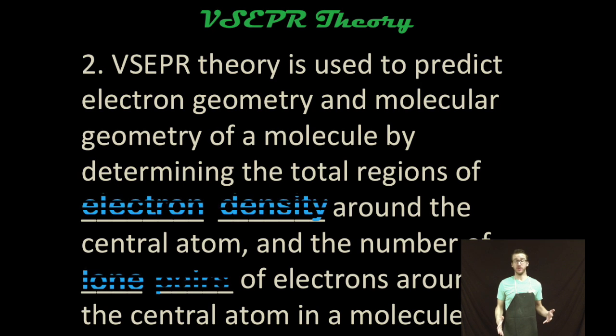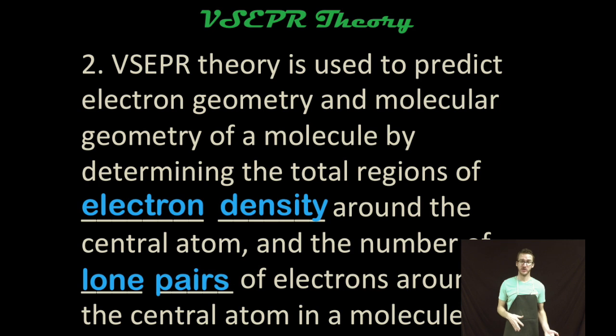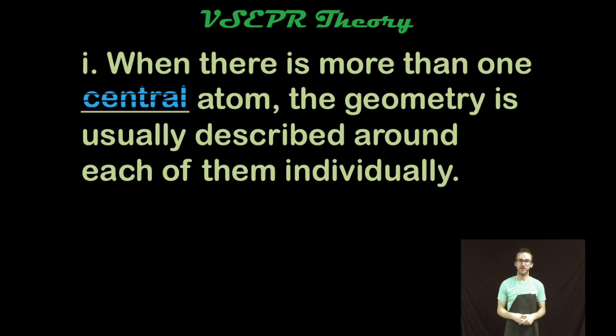Now use VSEPR theory essentially to predict the electron geometry and molecular geometry of a molecule, or what the heck is going on with the shape of a molecule. And we do so by determining the total regions of electron density around that central atom, and then we think about how many of those regions are lone pair regions of electrons. Keep in mind for those of you coming back for AP chemistry, when you do have more than one central atom, the geometry is usually described around each of those atoms individually.